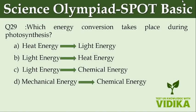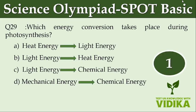Which energy conversion takes place during photosynthesis? Option A, heat energy to light energy. Option B, light energy to chemical energy. Option C, mechanical energy to chemical energy.